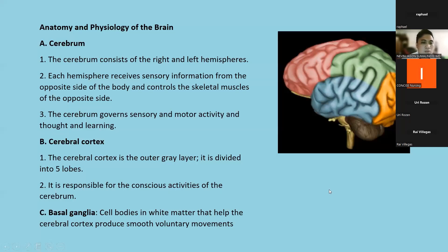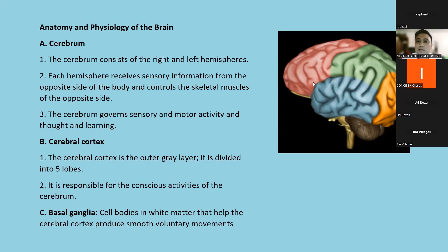The Cerebral Cortex has the outer gray layer and it is divided into five lobes. Our five lobes are: the frontal lobe (red), the temporal lobe (blue), the parietal lobe (green), and the occipital lobe (yellow). The other lobe is the insular lobe, located inside, usually seen inside the gyrus within the sulcus of our brain. It is responsible for conscious activity of the cerebral cortex, including our voluntary movements.